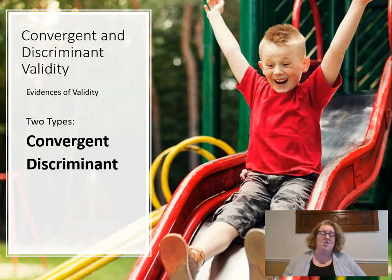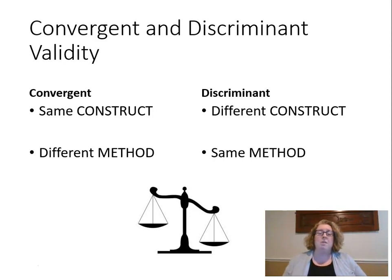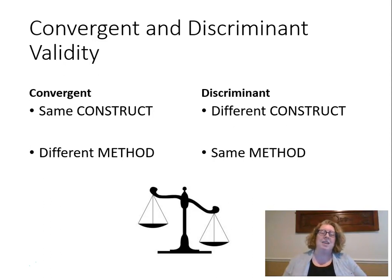We can also think about validity in terms of convergent and discriminant validity. Convergent validity is when I have the same construct measured by different methods. For example, if I have the end-of-course exam and the test I wrote myself — same construct, two different methods — I should have similar scores on the same thing. If they're both measuring math achievement, I should have similar scores on both tests. Discriminant validity would be two different constructs given by the same method. So if I had the math test and the reading test — same method, both standardized tests — but I should get different scores. Some kids should do better on reading and some on math. If I got really similar scores on math and reading and the math test had a lot of word problems, I might think that math test was really measuring reading and not math. So convergent validity means scores should be the same because they're measuring the same content, and discriminant validity means I should get different scores because they're measuring different things.